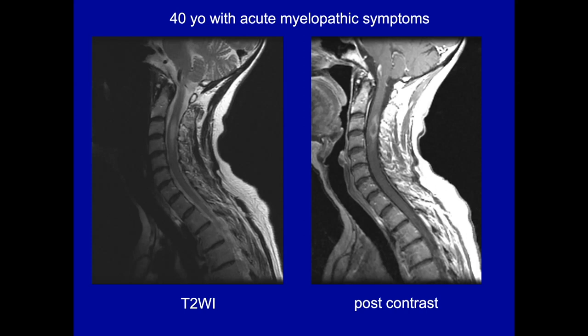When confronted with a lesion like this, the question is what to do next. Your choices are to call surgery, get CSF, image the lumbar spine, brain, and entire cord. What I think you should recommend is to get CSF, look at the entire spinal cord and brain, and bring the patient back before you make the diagnosis of a spinal cord tumor. There was no prior imaging and no prior symptoms in this patient.